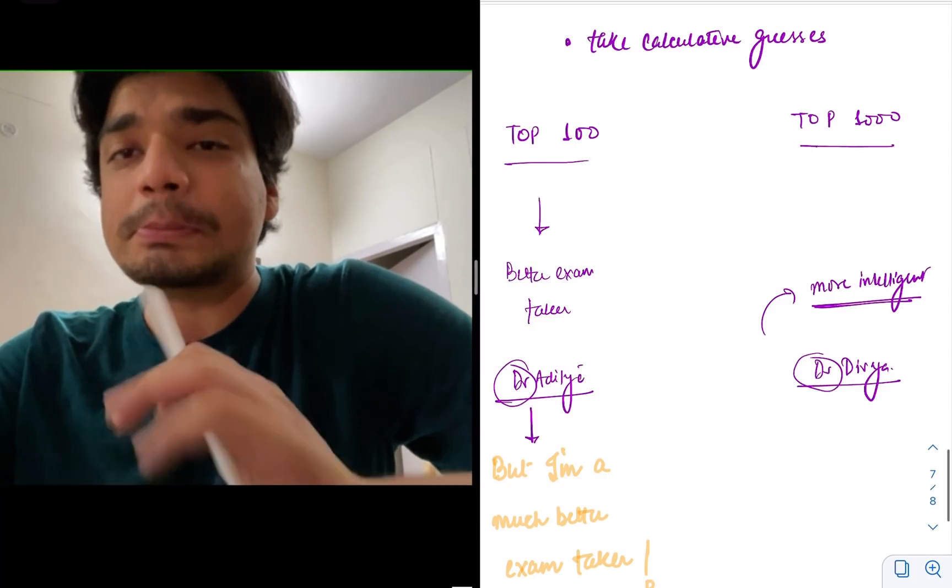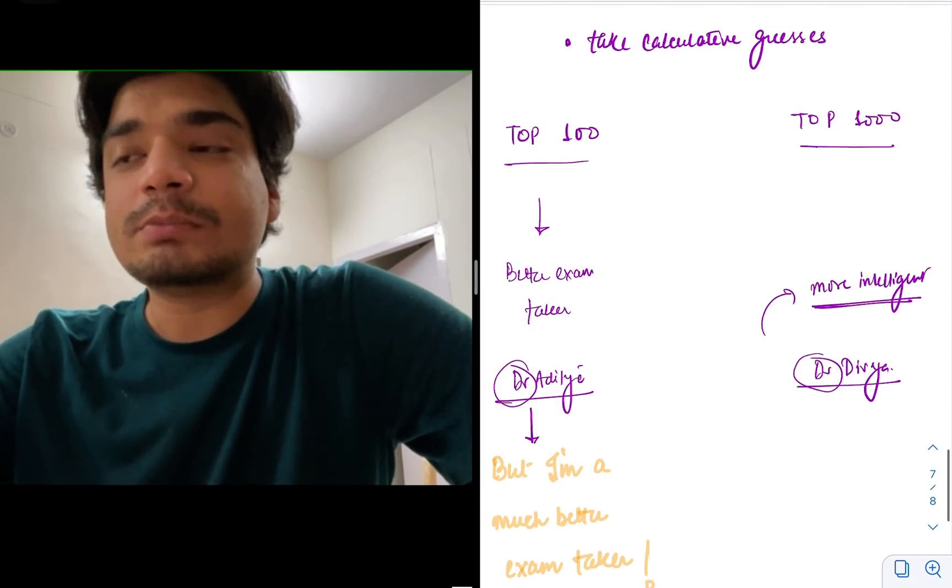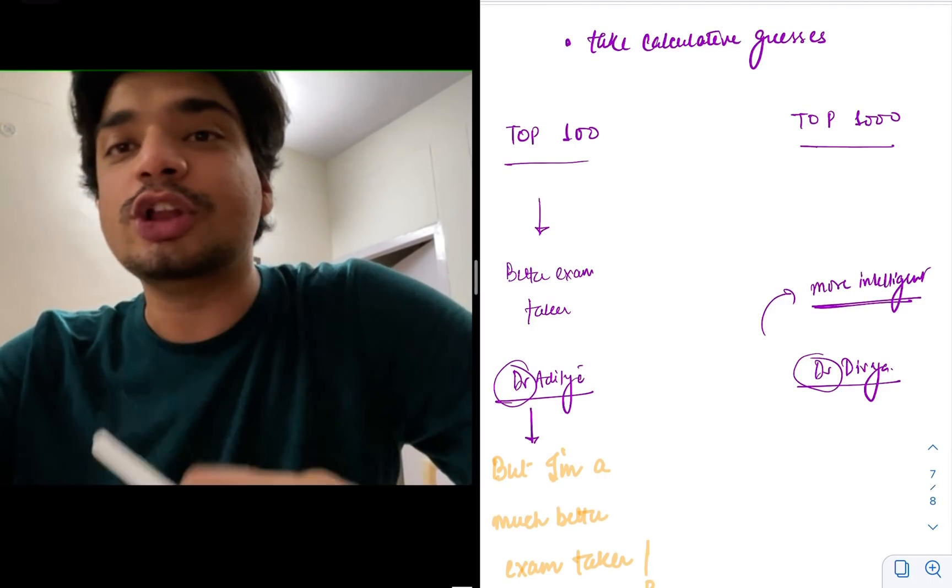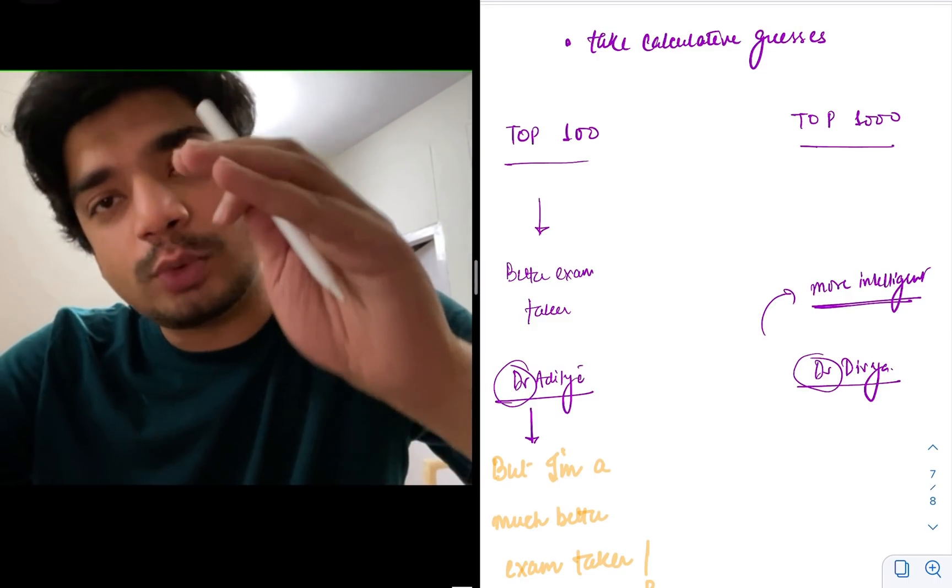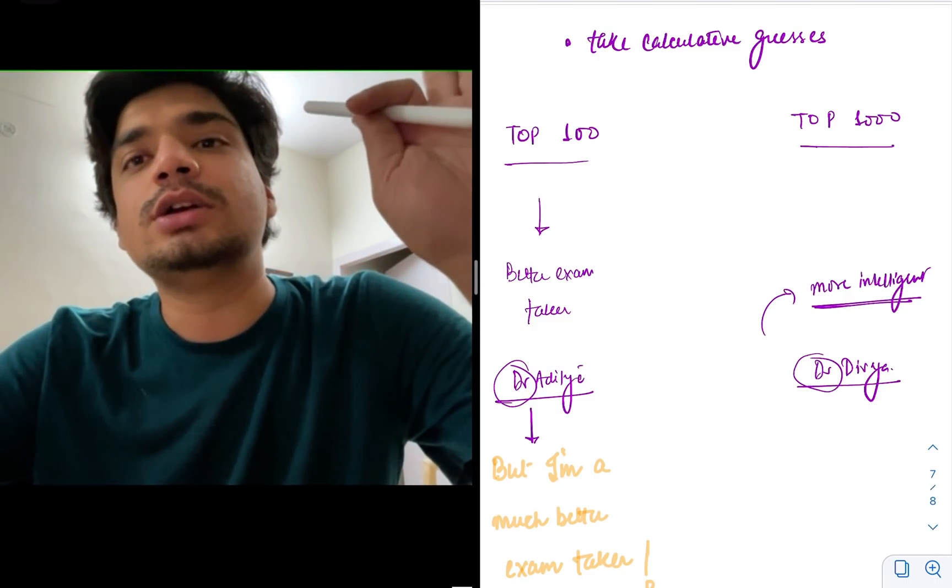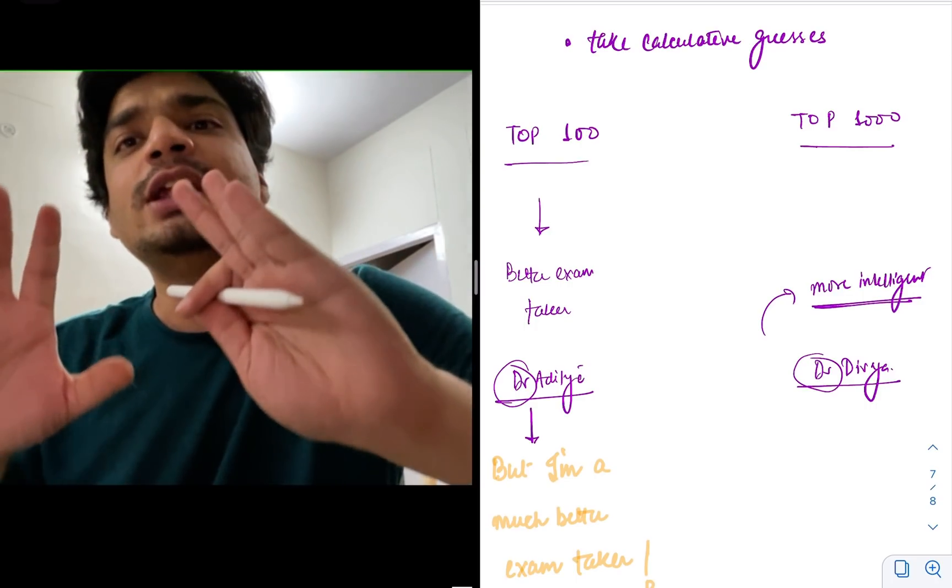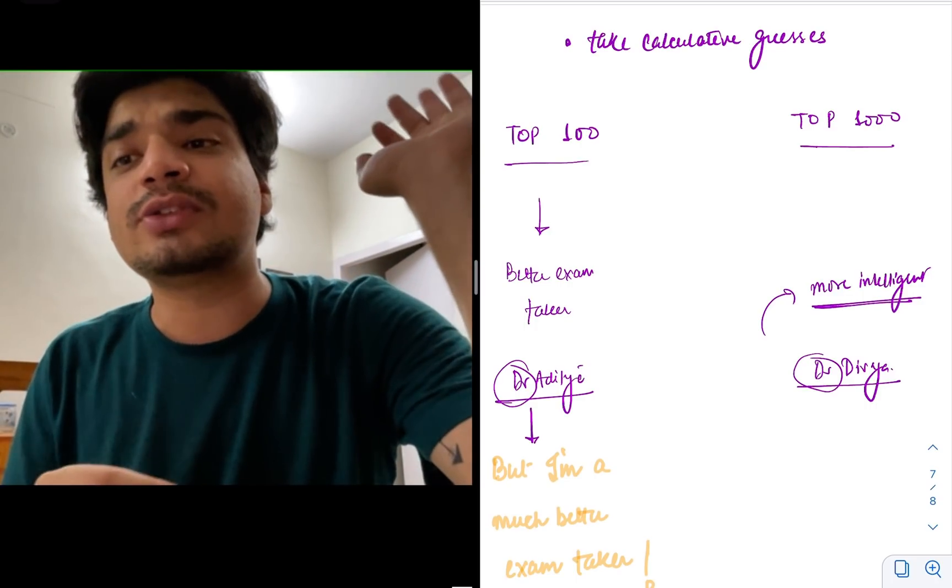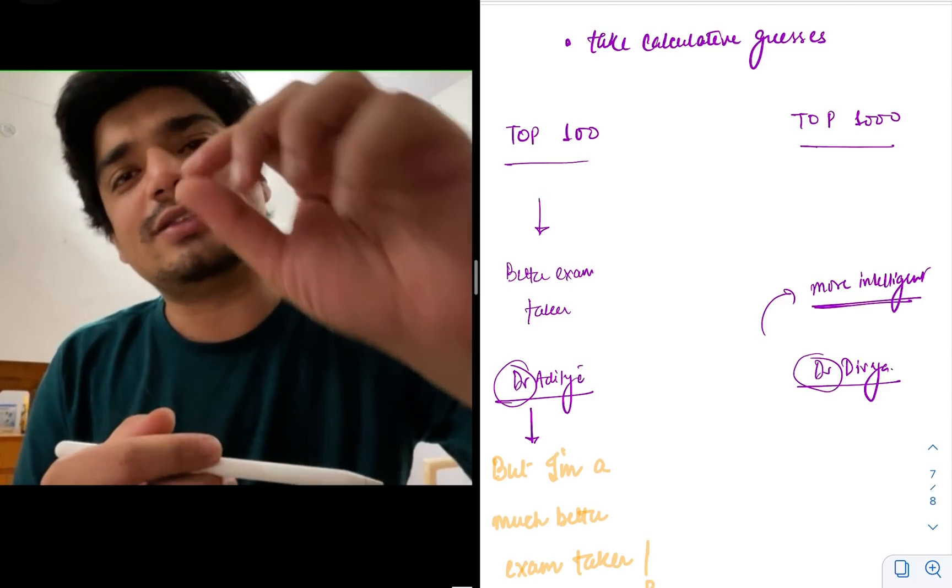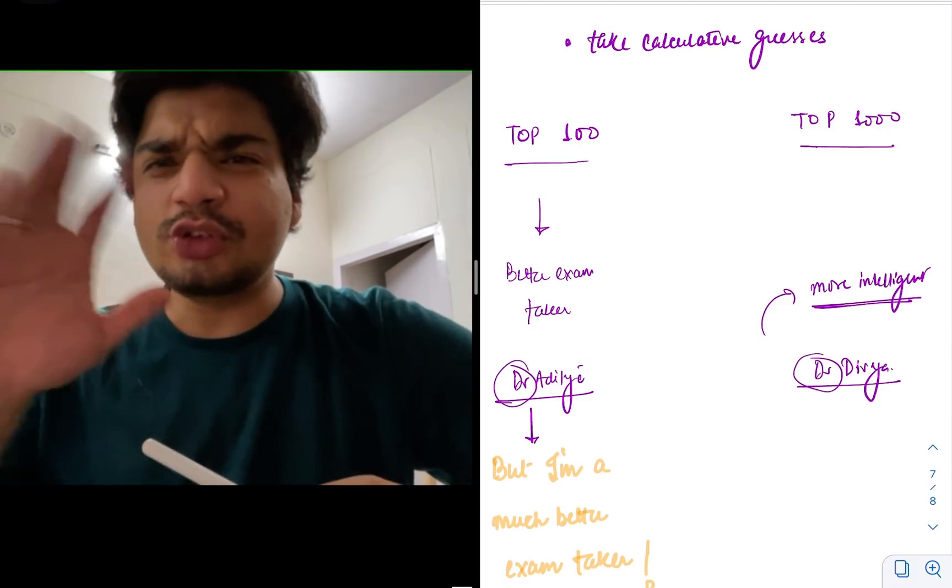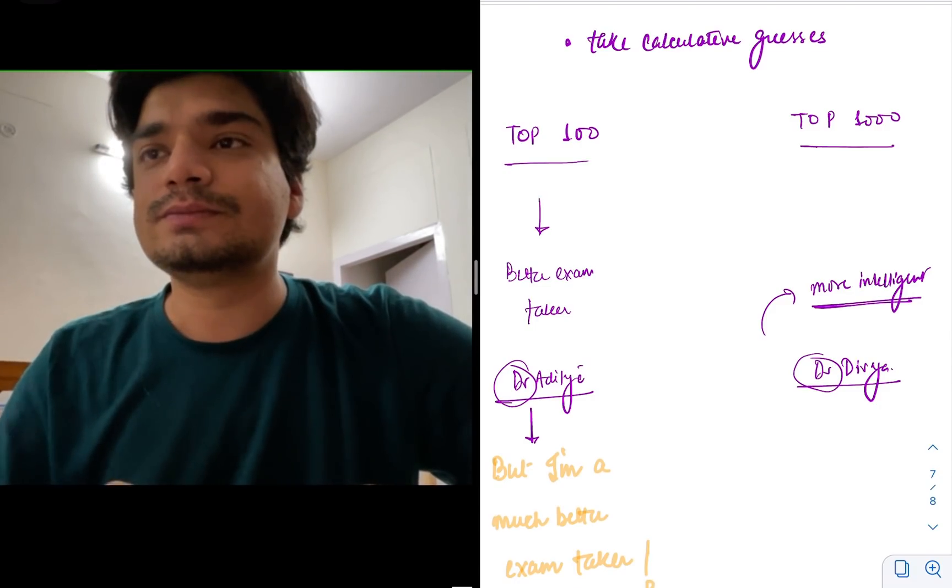Best example, me and Divya. I can easily tell you right now, Divya is way more knowledgeable. Even during her UG, she's one year junior to me. And even during post graduation, definitely. She had studied definitely more. I was much more weak in two, three topics. But I am a better exam taker. Even she acknowledges that.